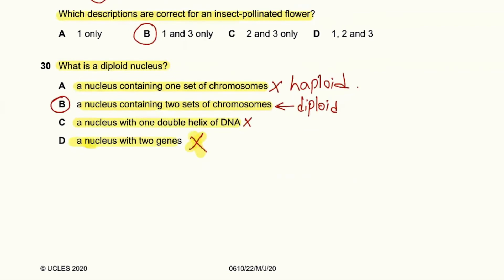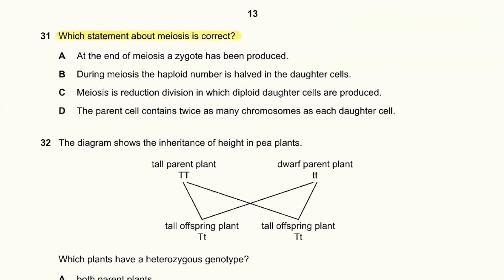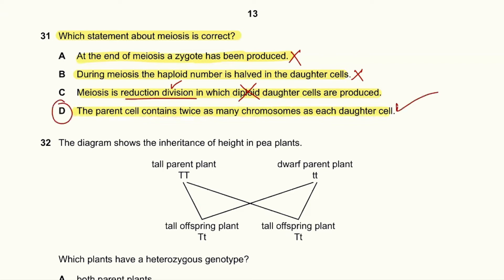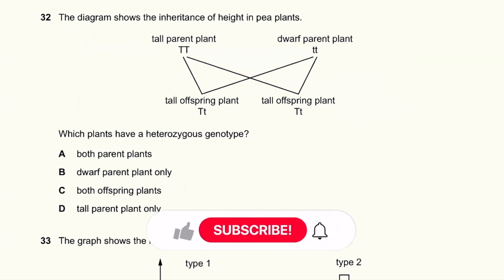Question 31: Which statement about meiosis is correct? Meiosis does not produce a zygote — fertilization does. During meiosis the diploid number is halved in the daughter cells, not the haploid number. Meiosis is a reduction division but it does not produce diploid daughter cells. The correct answer is D: the parent cells contain twice as many chromosomes as each daughter cell, since meiosis produces haploid daughter cells.